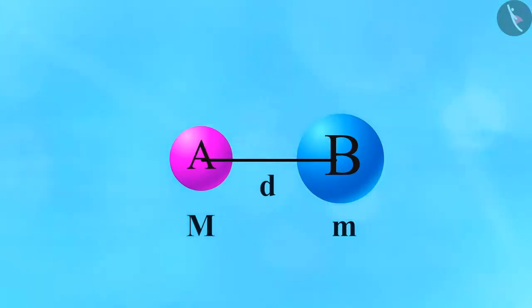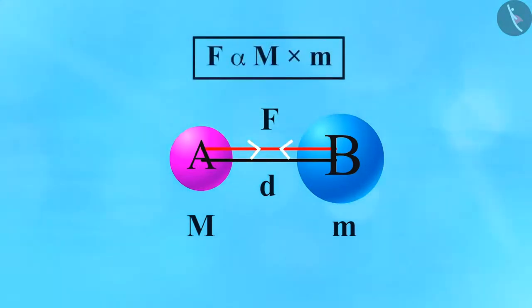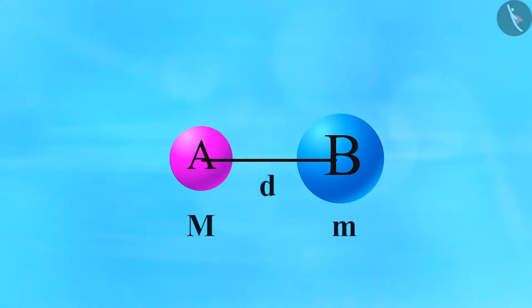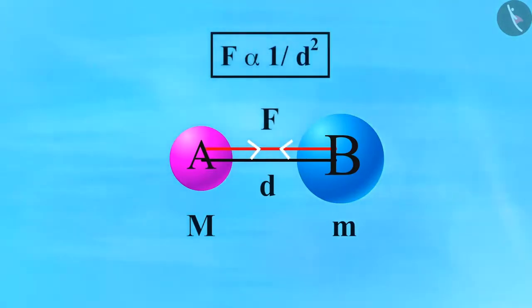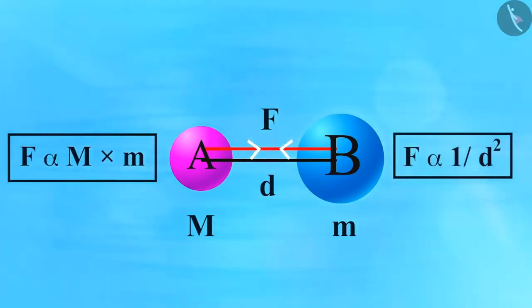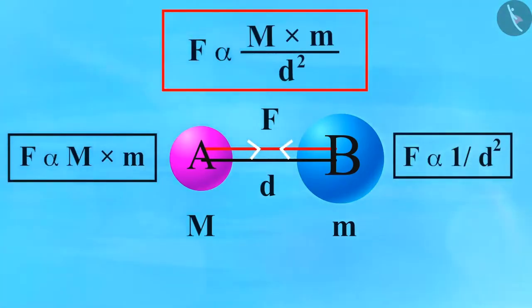According to the universal law of gravitation, the force between the objects is directly proportional to the product of their masses. So, mathematically we can write it as F directly proportional to M multiplied by m. Now, the force is inversely proportional to the square of the distance between the two objects, that is, F directly proportional to 1 upon d square. Combining these two equations, we get F is directly proportional to M multiplied by m upon d square.